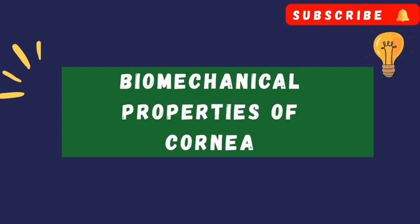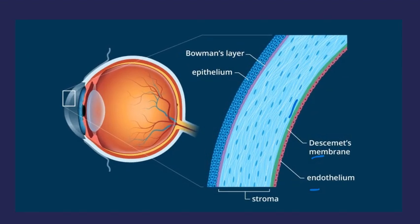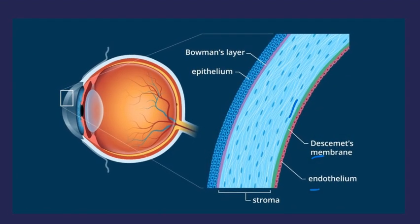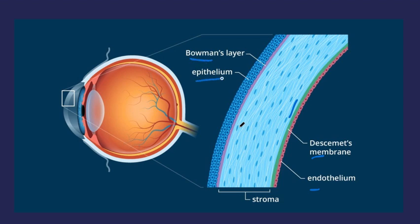Before we dive into the thinning and bulging that define ectasia, let's take a step back into the cornea itself, because in order to understand why ectasia happens we first need to understand how the cornea behaves under pressure. Our cornea is made up of six layers: the epithelium, Bowman's layer, the stroma, the pre-Descemet's membrane, Descemet's membrane, and the endothelium.